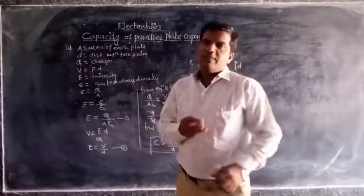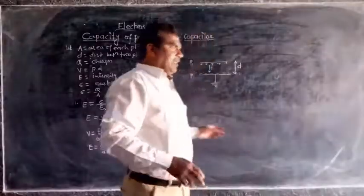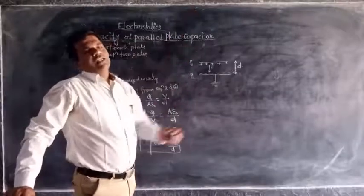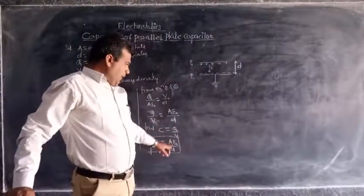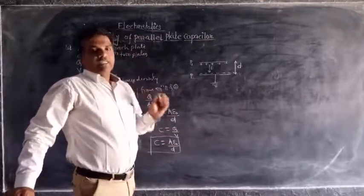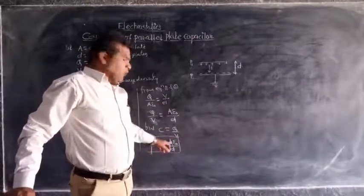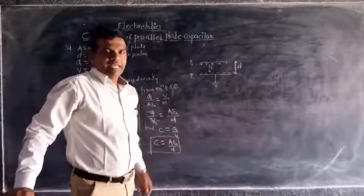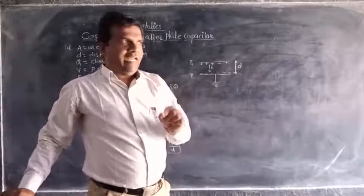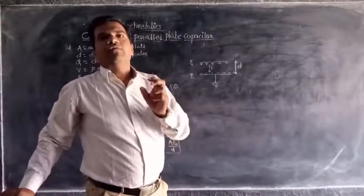Now we have to see the effect of dielectric on the capacity of a capacitor. In this case, there is no dielectric — the dielectric is vacuum or free space — and therefore C equals A epsilon-zero upon d. If there is a dielectric medium whose dielectric constant is K, then we can write C equals A epsilon-zero K upon d. The capacity of the capacitor with dielectric is greater than the capacity of the capacitor without dielectric.